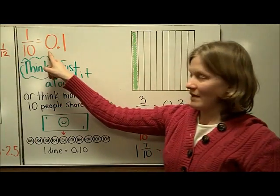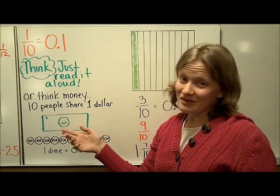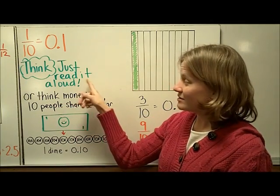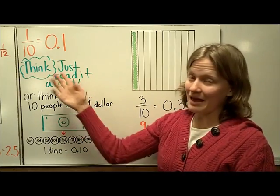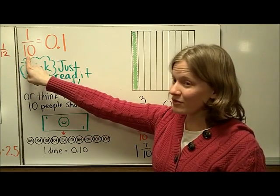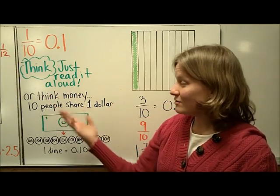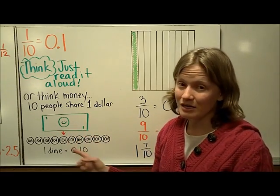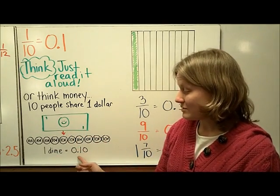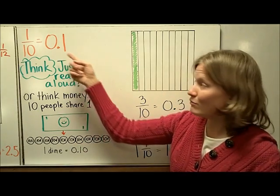The next one is 1 10th, and it's equal to the decimal 1 10th. This one is sort of an obvious one. The easiest way that I know is to just read it out loud. And by that I mean that 1 10th the fraction, you read the same as a decimal, 1 10th. You can also think about it like money though, it still makes sense. If 10 people share 1 dollar, each person is going to get 1 dime. And 1 dime is equal to 10 hundredths, which is the same as 1 10th.